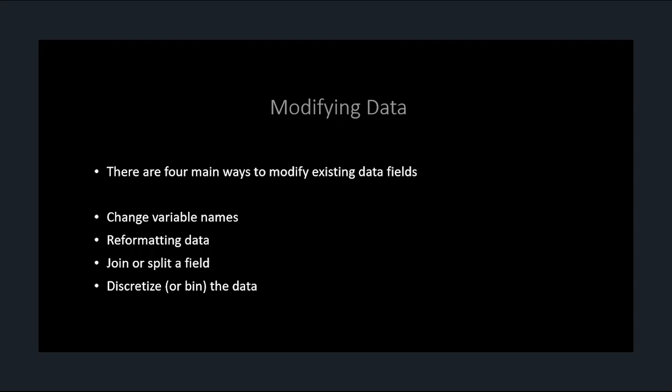First, change your variable names — that's actually fairly simple. You might want to do that if you're merging data and both the original and incoming data have a column named X that means different things; you'd have to rename one because you can't have two columns named X with different variables. Second, reformatting data — for example, you have phone numbers in one format and you want to reformat them, like stripping out the area code. Third, joining or splitting fields — like joining first and last name or splitting them into separate fields.